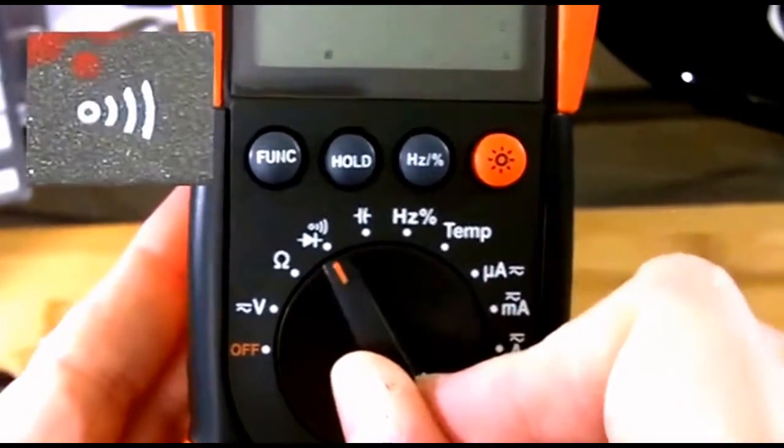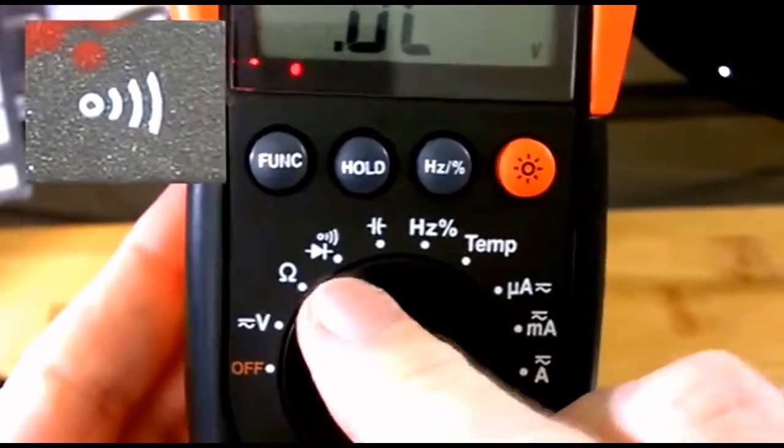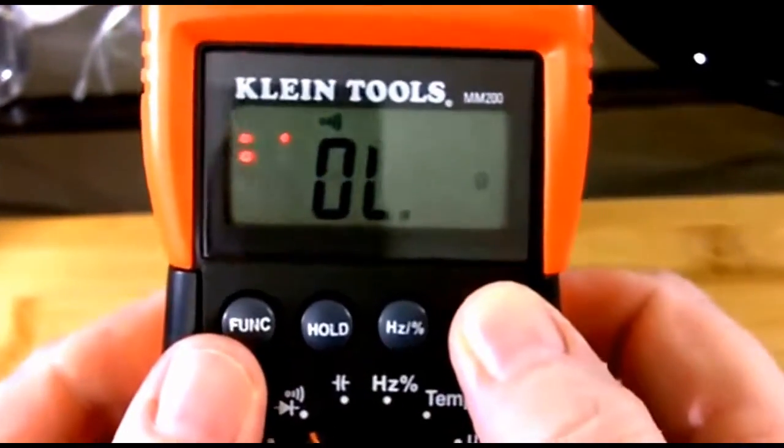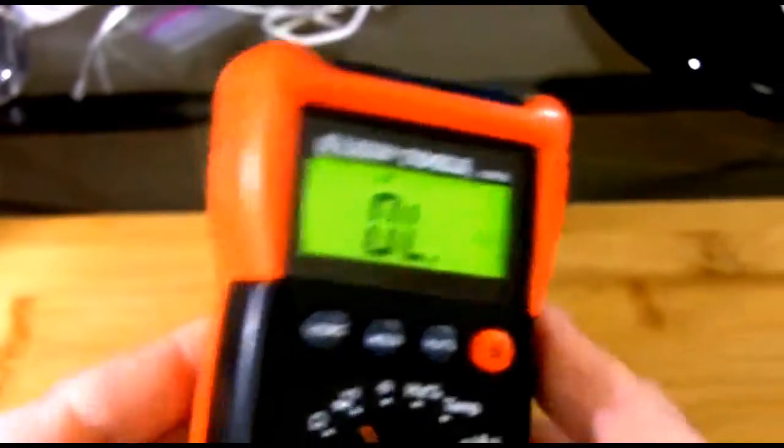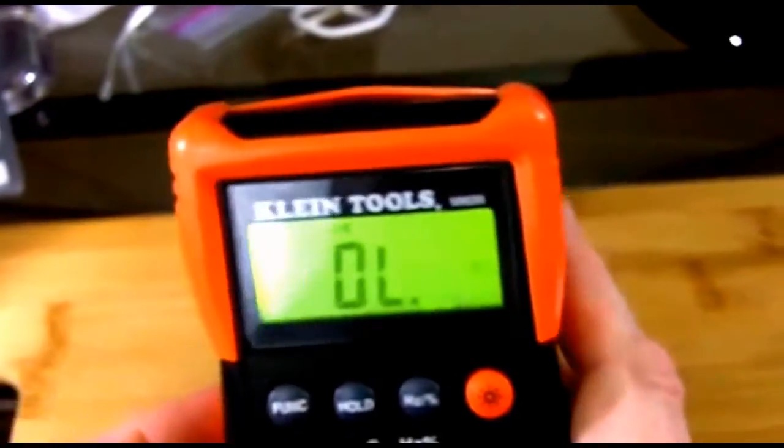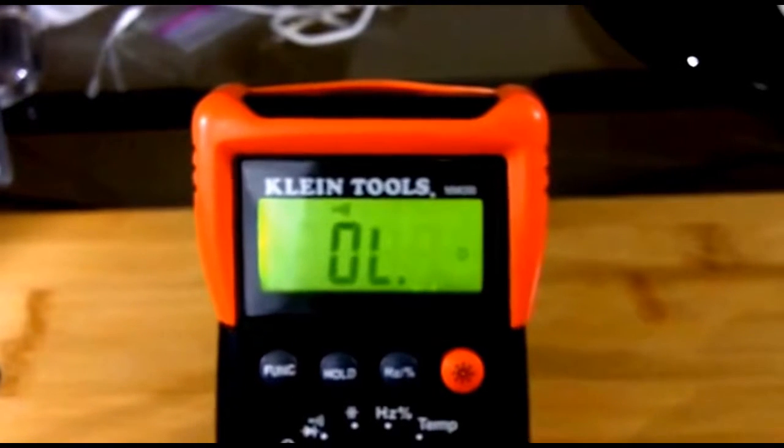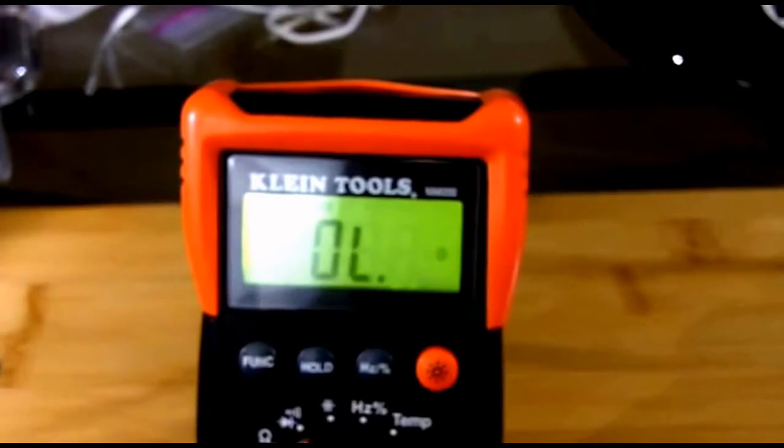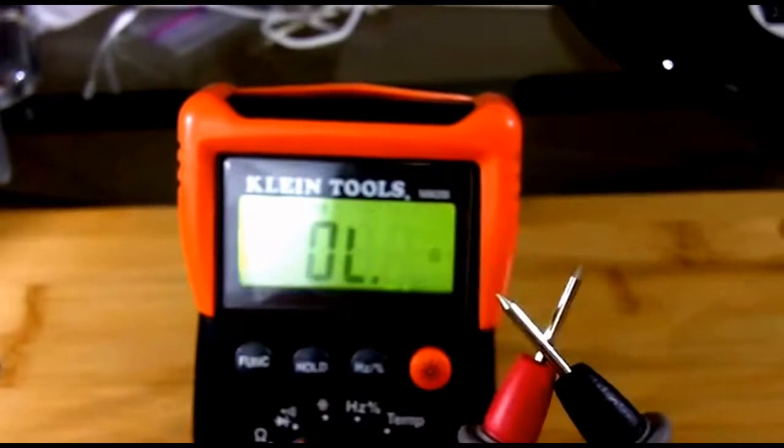Now, last one's kind of useful around the house. Continuity is the speaker, and that's measuring whether a flow can go all the way through. In other words, can power flow from one spot I have the lead on to the other. Now, this is great for, say, speaker wires. Say you have speaker wires that aren't working. They look fine on either end, but there may be a disconnect in the middle.